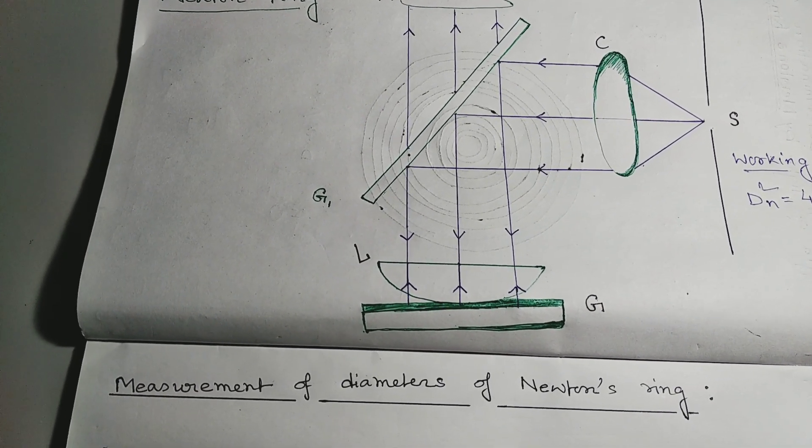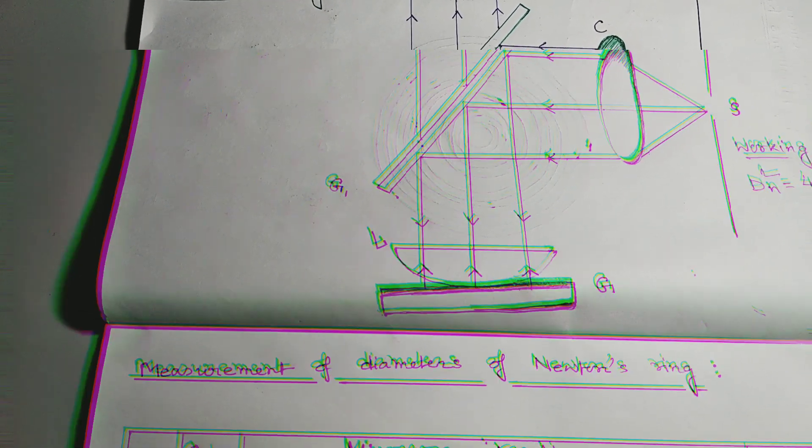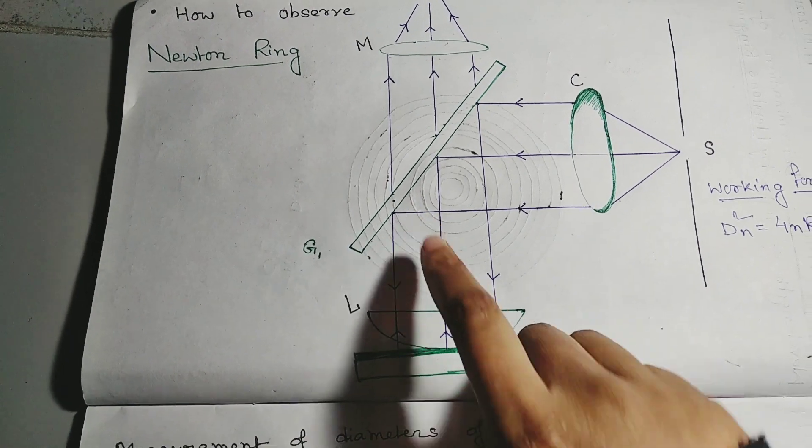Interference takes place and dark and bright circular fringes are produced. This is due to the interference between the light reflected at the lower surface of the lens and the upper surface of the glass plate.